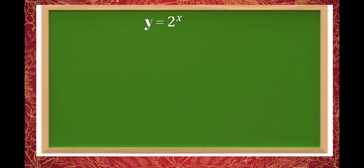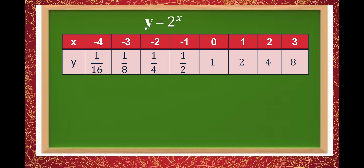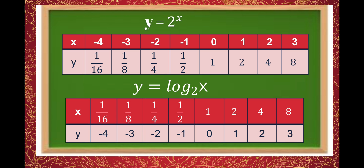Let us also review how to represent the exponential function in a table of values. In our previous lesson, the table of values of y is equal to 2 raised to x was given. Now, since the exponential function is the inverse of the logarithmic function, the values of x and y interchange. So the value of x for the exponential will be the value of y for the logarithmic function, and vice versa.